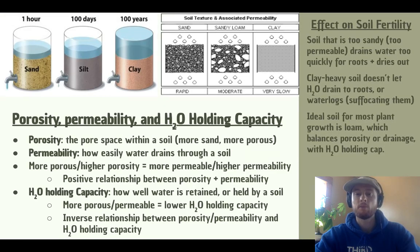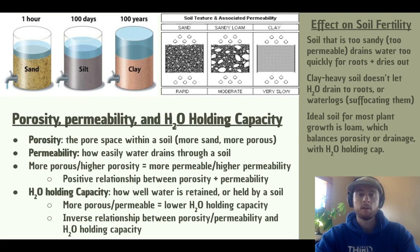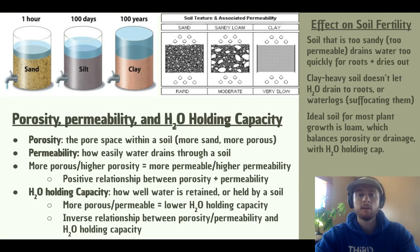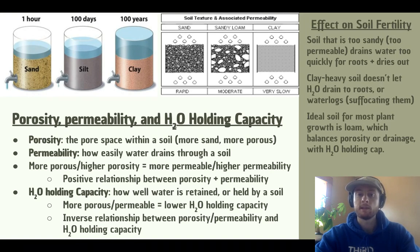Now we'll look at how porosity relates to water movement through soil in more depth. Porosity is the pore space between soil particles — the more porous a soil is, the more easily water enters it. If a soil is more porous, then it's also more permeable. Permeability refers to water's ability to drain through a soil, so water can drain through really easily with high porosity. On the other hand, if a soil is more permeable, it doesn't hold water as well — it has a lower water holding capacity. So porosity and permeability have an inverse relationship with water holding capacity: the more porous or sandier a soil is, the less water it can hold.